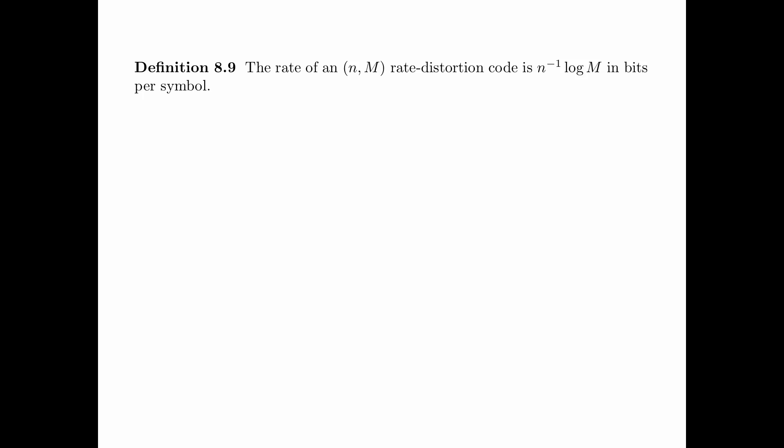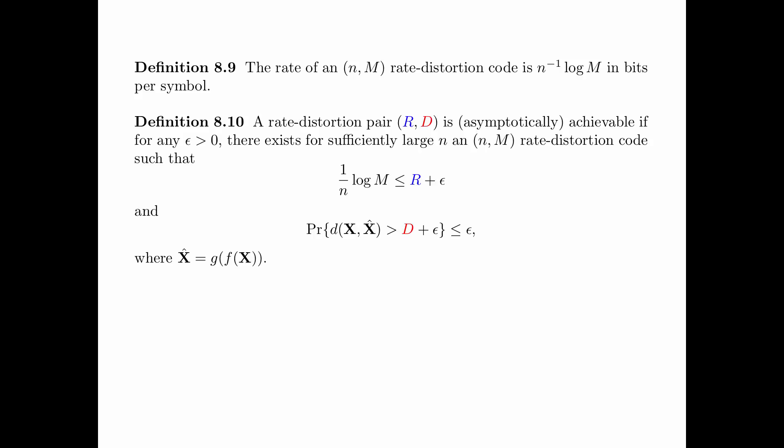The rate of an NM rate-distortion code is (1/N) log M in bits per symbol. A rate-distortion pair (R, D) is asymptotically achievable if for any epsilon greater than 0, there exists for sufficiently large N an NM rate-distortion code such that the rate is less than or equal to R plus epsilon, and the probability that the distortion between the source sequence x and the reproduction sequence x-hat exceeds D by an amount epsilon is less than or equal to epsilon, where the reproduction sequence equals g(f(x)).